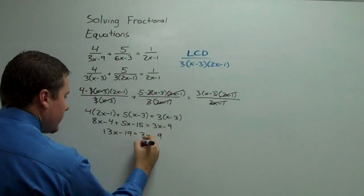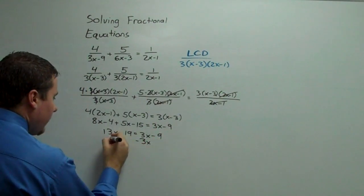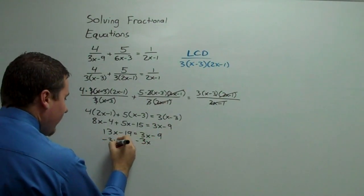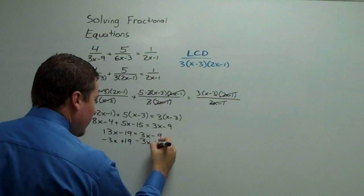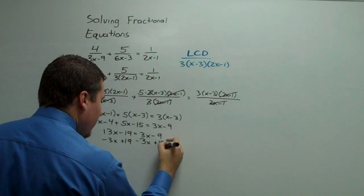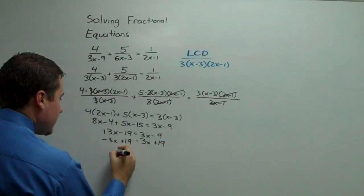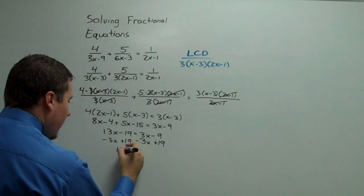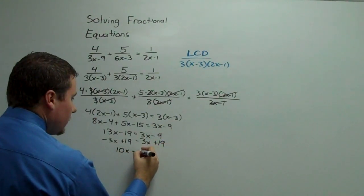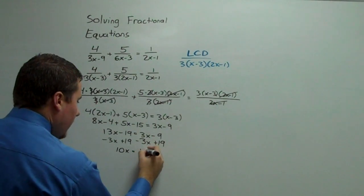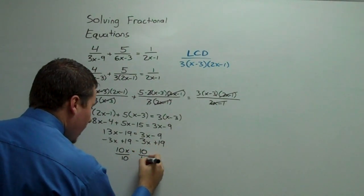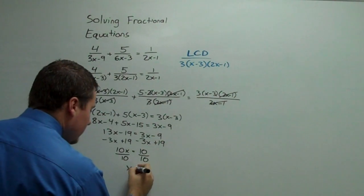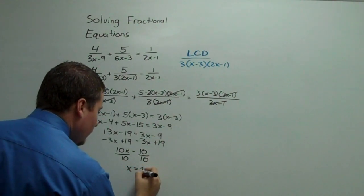So I'm going to subtract 3x from this side and add 19 to this side, and that gives me 10x equals 10. Dividing by 10, x is equal to 1.